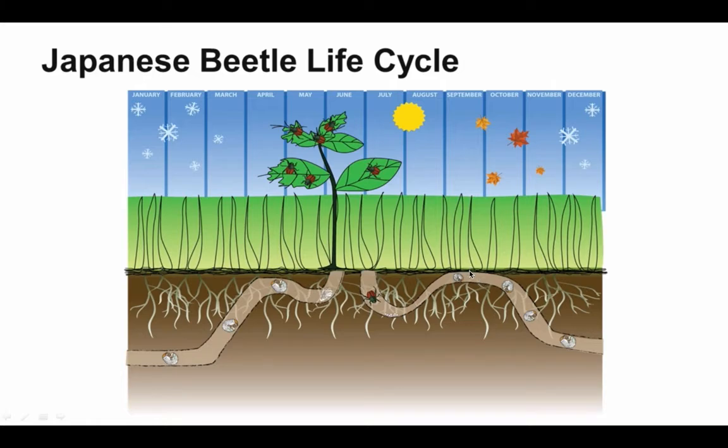This brings me to the next point. There's two really good time periods to treat for grubs. Number one would be June and July while they're very young. It's just not very difficult for an insecticide to go ahead and kill an egg. And then also here in the current time period of September and October, while they're still shallow in the soil profile, meaning that insecticide won't have to penetrate as deeply.